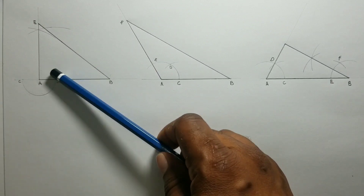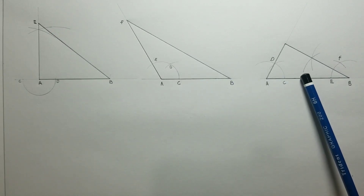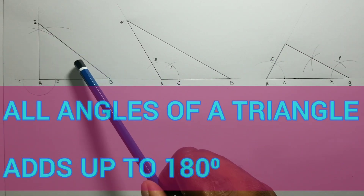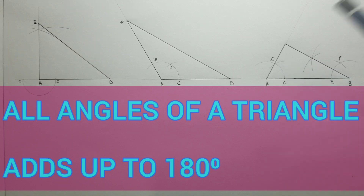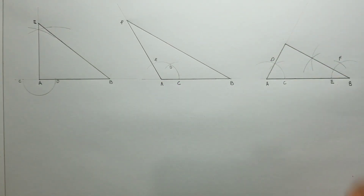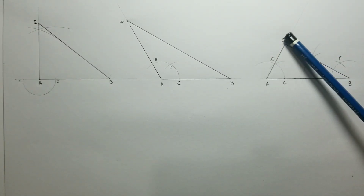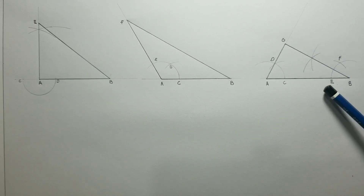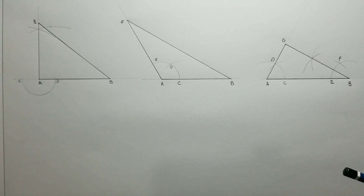This is my right angle triangle, this is my obtuse triangle, and this is my acute triangle. With all triangles, all the angles of the particular triangle will add up to give us 180 degrees. So angle GAB, angle AGB, and angle ABG will all add up to give us 180 degrees.